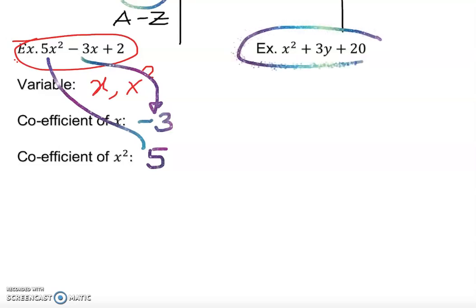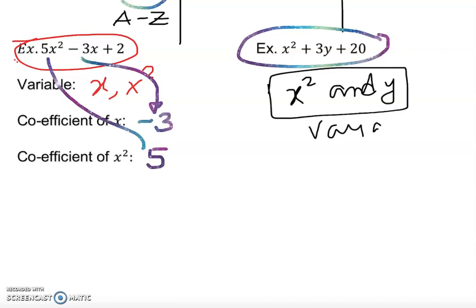So my variable in this case is x square and y will be my variables. Now the coefficient of y is 3, and coefficient of x square, notice that if there is nothing, there is 1.